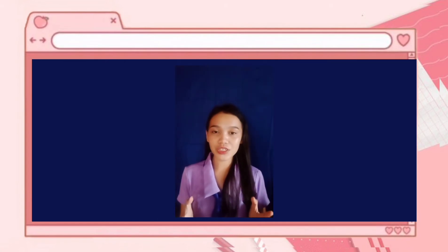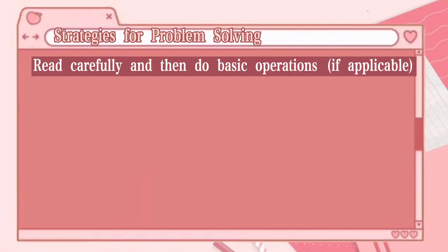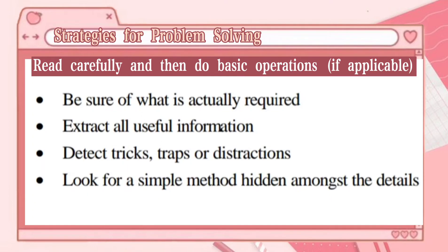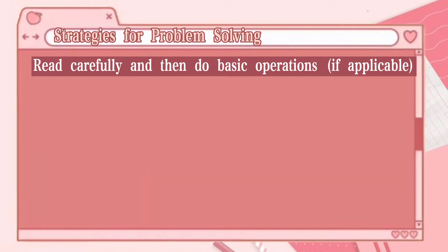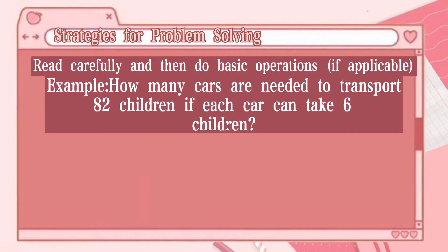Now let's solve the given examples of problem solving and mathematical investigation by following the suggested strategy. First, read carefully and do basic operations if applicable. Be sure of what is actually required. Second, extract all useful information, detect tricks, traps, or distractions, then look for a simple method hidden amongst the details. In the given problem: how many cars are needed to transport 82 children if each car can take 6 children? The calculation is quite simple — the hard part is reading the information to see what is required.